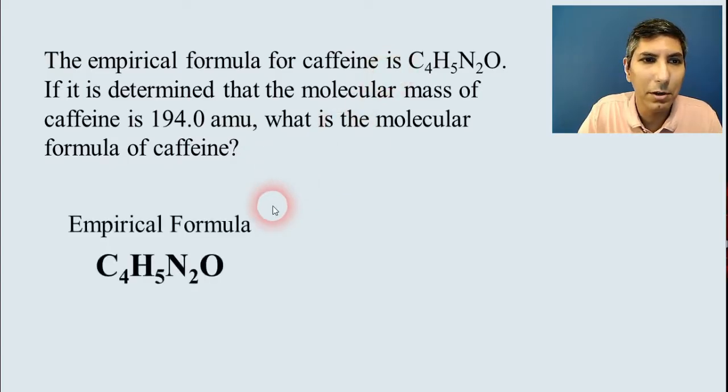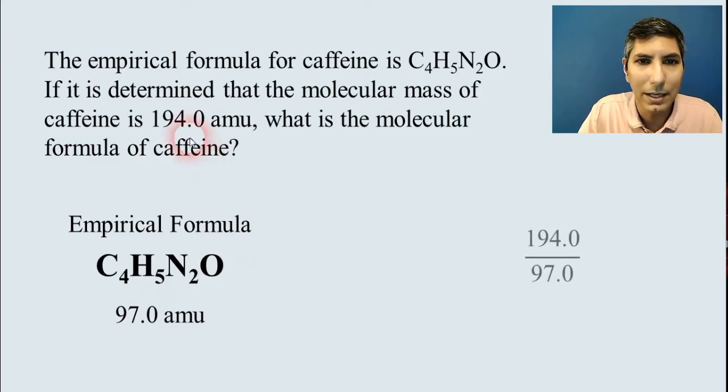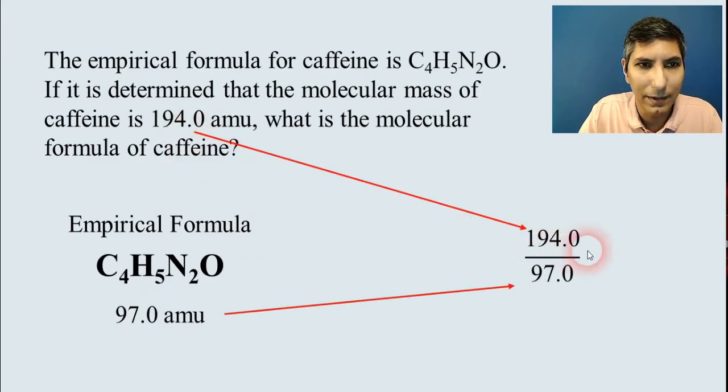And the way that we do that is we take the empirical formula that we just calculated and we add up the atomic masses of all these. And we find the molecular mass of this object here. So four carbons, that's 12 apiece, 48. We have five hydrogens at about one apiece, that's five. Two nitrogens at 14 apiece, that's 28. And one oxygen, which is 16. That adds up to 97. Now, the molecular mass is 194. So we divide the molecular mass by the empirical mass that we just got. And we find that the ratio there is 2.